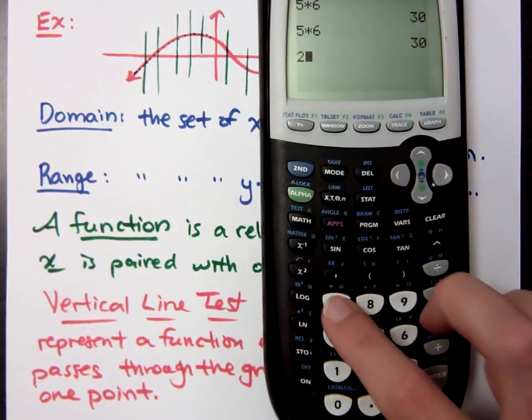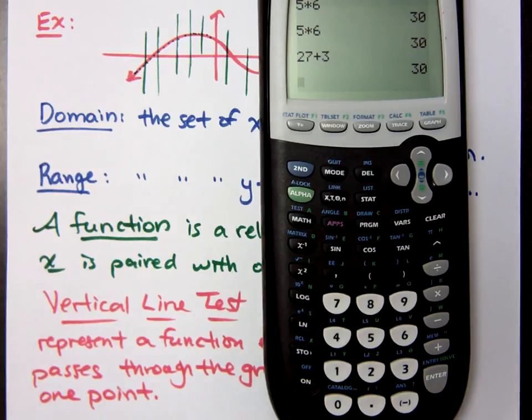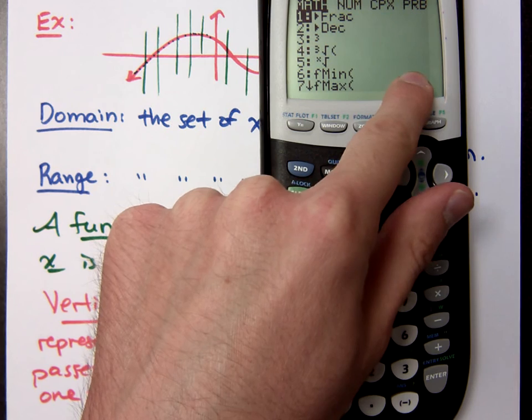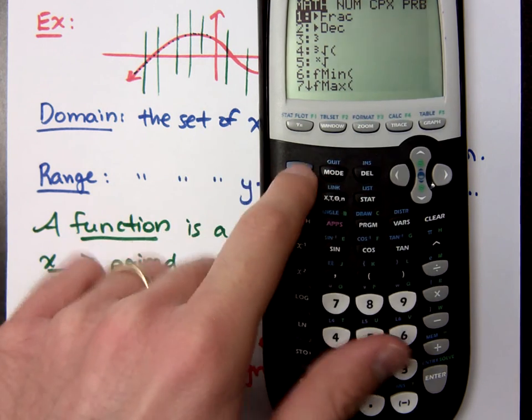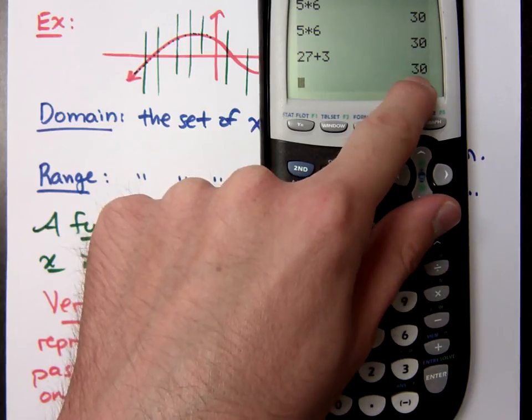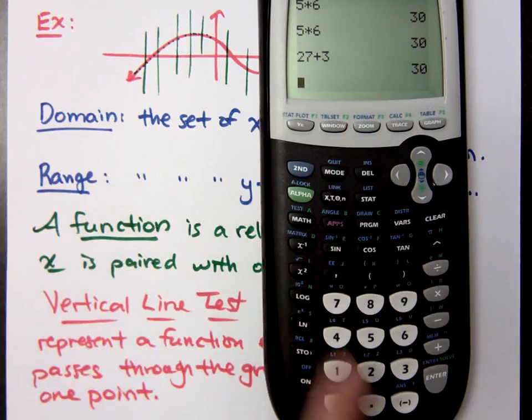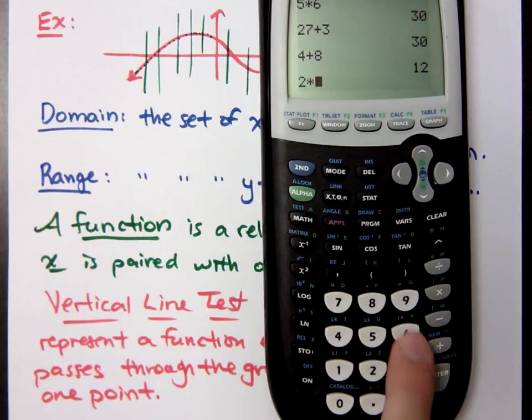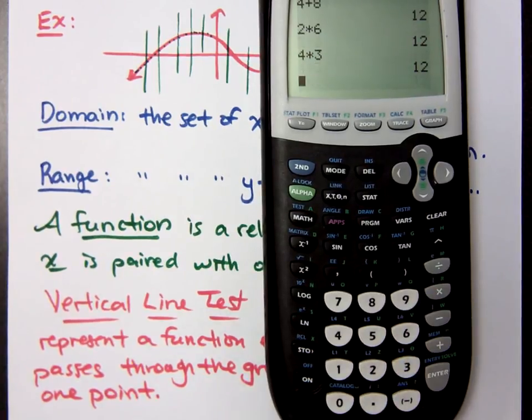Now, let me ask you this. Is 5 times 6 the only way to get to 30? No, I could do 27 plus 3, and I still get 30. But here's the thing. If I type in 27 plus 3 again, what do I get? So that's an example of a function. This is my input, and I get a single output value. Is the output value unique? Is that the only way to get to 30? No. If I do 4 plus 8, I get 12. No matter how I type in 4 plus 8, I can only get 12. But is that the only way to 12? No. 2 times 6, 4 times 3. Each of these input values gives me one answer. Okay? So we have a function here.